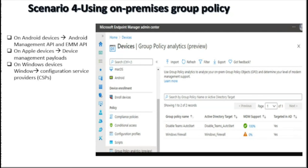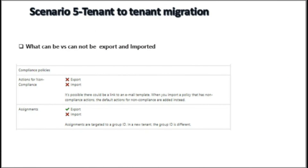To use Group Policy Analytics, we need to export the on-premises GPOs we want to migrate, import them into Intune's Group Policy Analytics, and evaluate MDM support readiness. The last scenario is tenant-to-tenant migration in Intune, meaning you have two or more Intune tenants and want to merge them into a single tenant. In this case, we can either recreate all policies from the different Intune tenants into the main tenant — which is time consuming — or export and import policies using Microsoft Graph and Windows PowerShell.